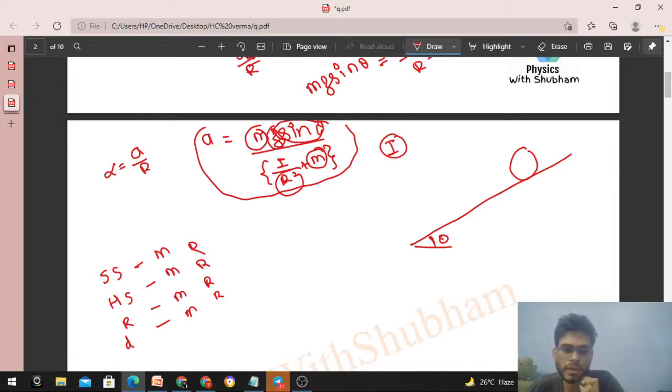Now the moment of inertia you should know. Solid sphere is 2/5 of mr square. Hollow sphere is 2/3 mr square. Ring is simply mr square. And disk is mr square by 2.